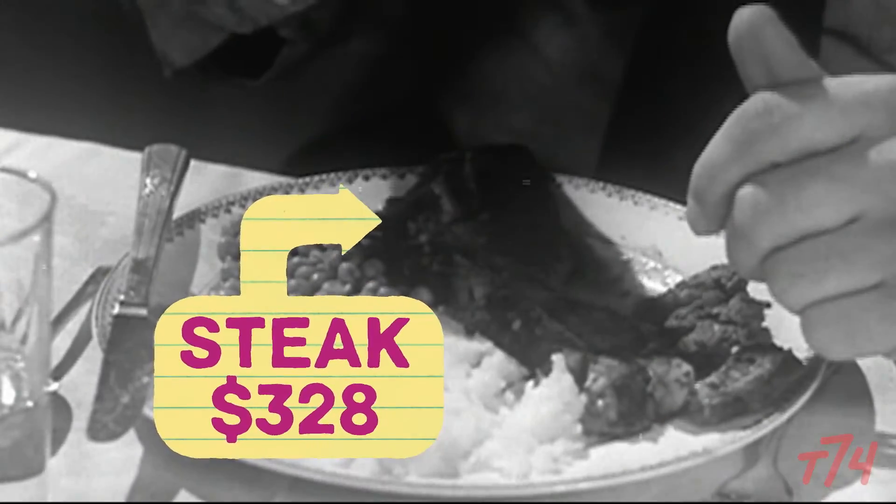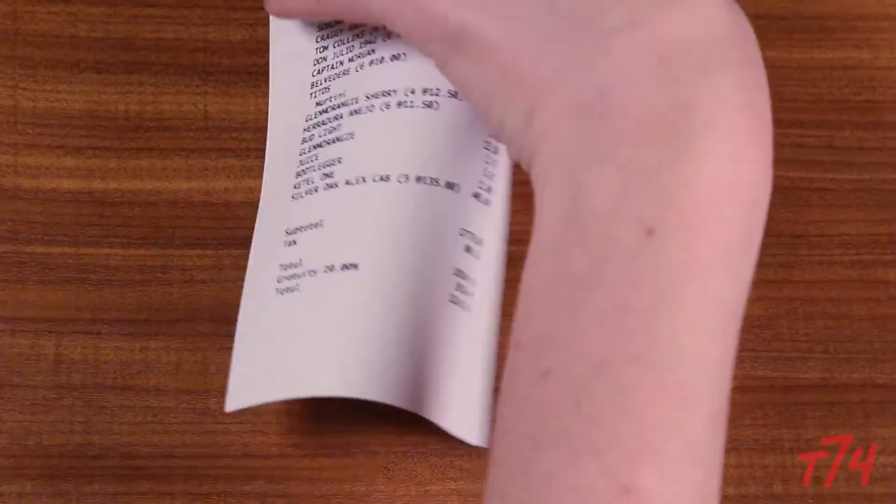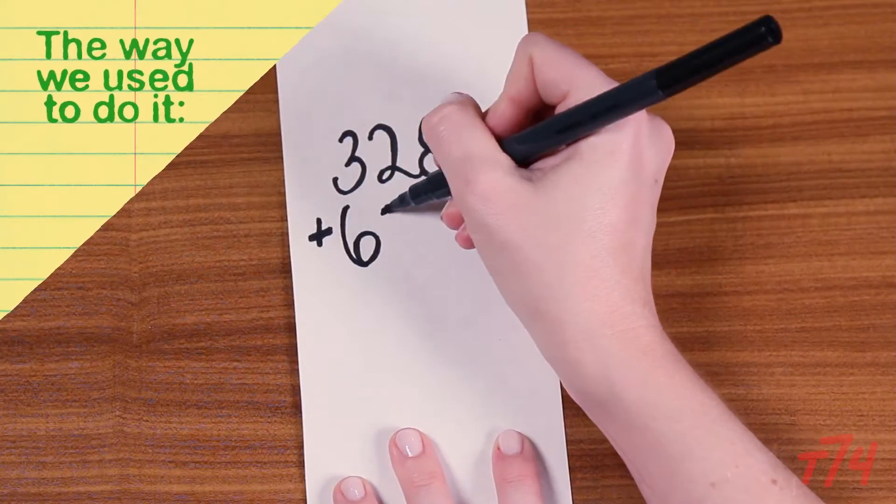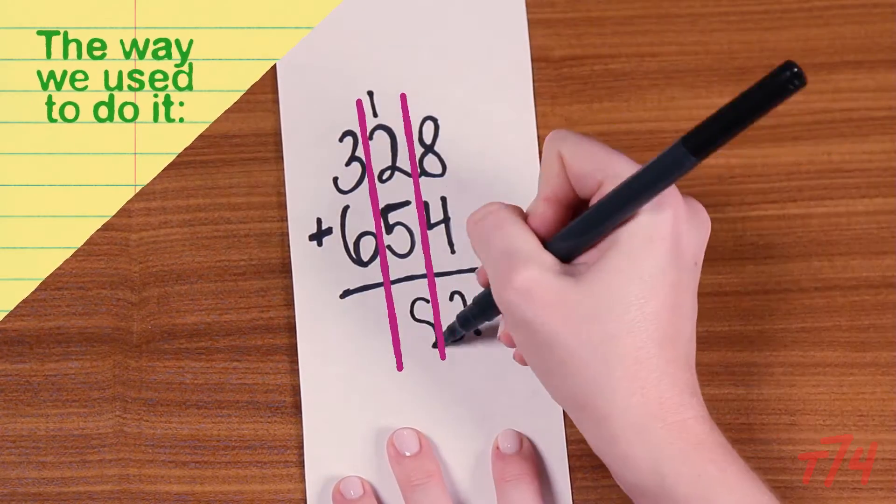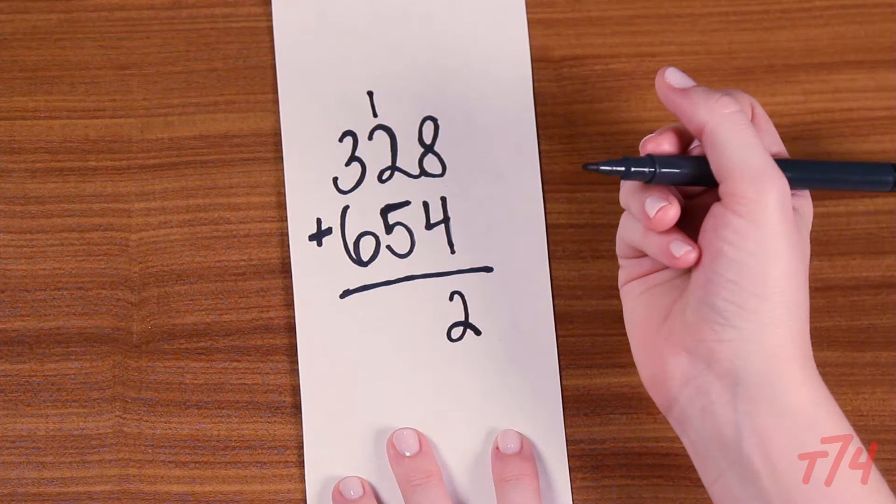Yeah, it was an expensive meal. And our wine was $654. Bear with us here, it's for the math. How much do we owe? Before, the way parents used to do it, we would teach them a traditional algorithm. We threw away everything that they understood about place value.